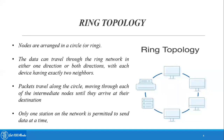Now let's talk about ring topology. Here the nodes are arranged in a ring format. Nodes refer to systems or any other devices connected to the network, arranged in a circular form. The data can travel through the ring network in either one direction or in both directions, which is a unique specialty of ring topology compared to star and bus.